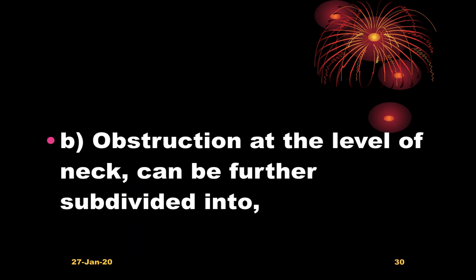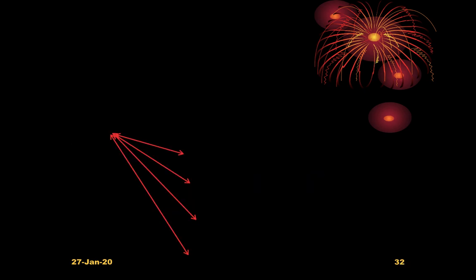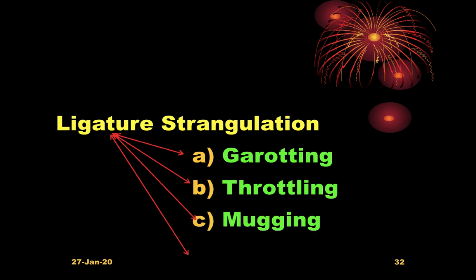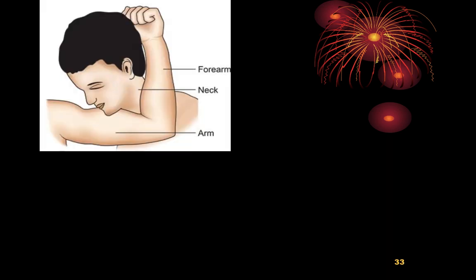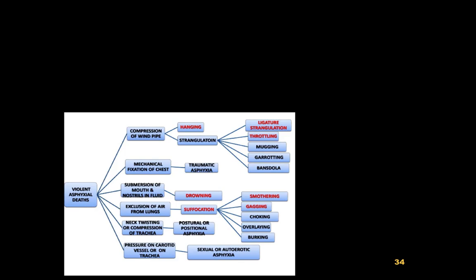Obstruction at the level of the neck can be further subdivided into hanging, ligature strangulation, and manual throttling. Ligature strangulation can be by garroting, throttling, mugging, or banstola. Mugging is compression of the neck within the arm, while banstola is constriction of the neck between two sticks.